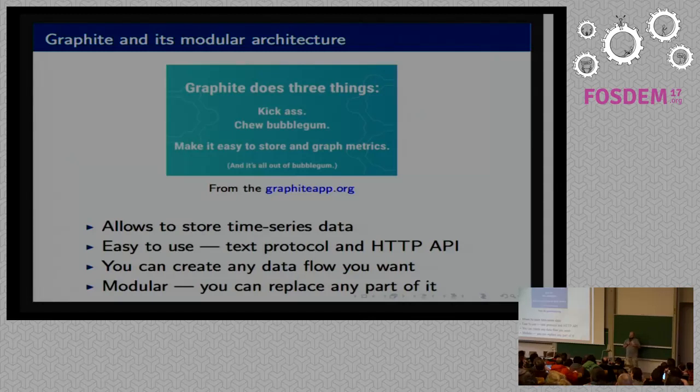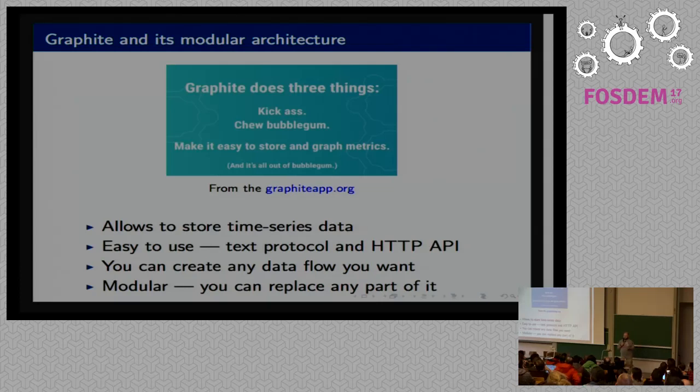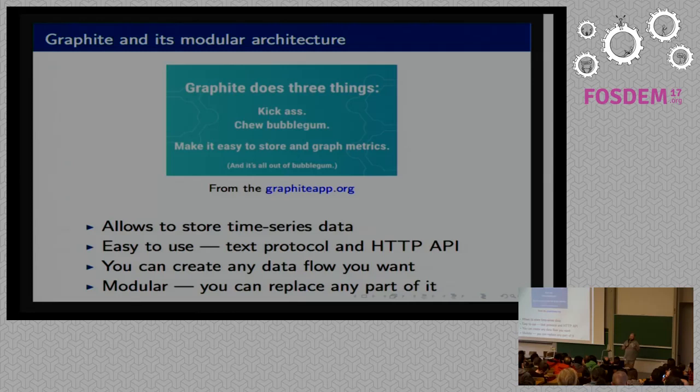At Booking.com we chose graphite several years ago, in 2011 or something like that. What is graphite? Graphite describes that it can do three things really well: kick ass, chew bubblegum, and make it easy to store and graph your data.